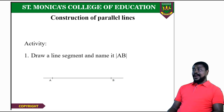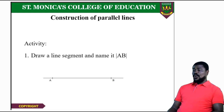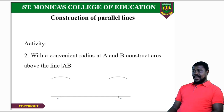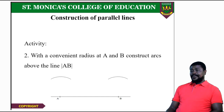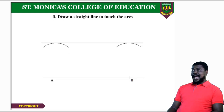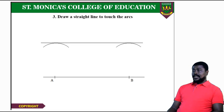We now move on to construction of parallel lines. Draw a line segment and name it AB — choose your own length. With a convenient radius at A and B, construct arcs above the line AB. Draw a straight line to touch the arcs. The two lines are parallel because they are the same distance apart, and when prolonged they will never meet.